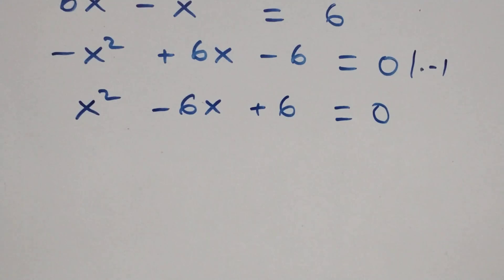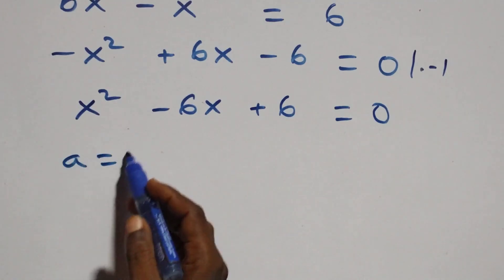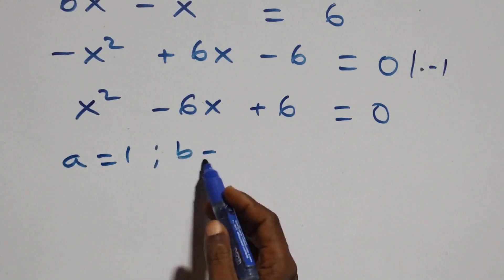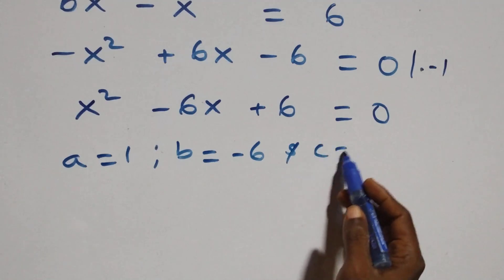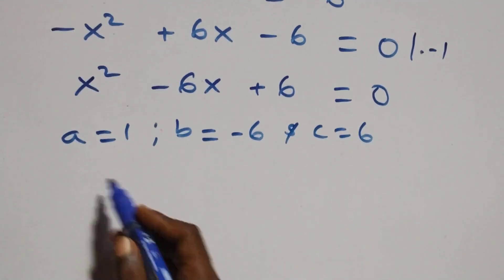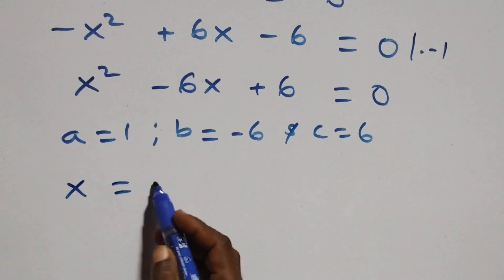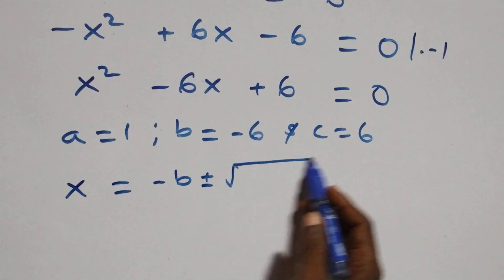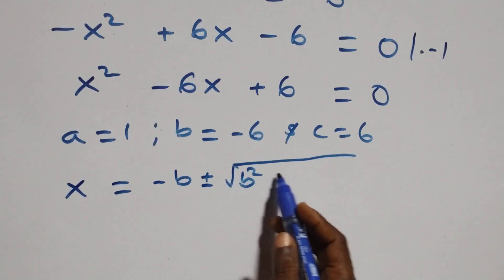We now have a quadratic equation where a equals one, b equals minus six, and c equals six. Applying the quadratic formula: x equals minus b plus or minus square root of b squared minus four ac, all over two a.